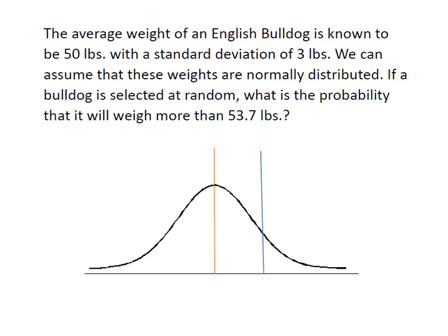So the average weight of an English Bulldog is known to be 50 pounds on average with a standard deviation of 3 pounds. We can assume that the weights are normally distributed. If we draw a Bulldog at random, what's the probability it will weigh more than 53.7 pounds.